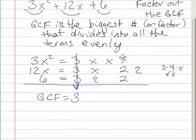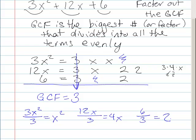That means we can factor 3 out of each of the terms. If we divide 3x squared by 3, we're going to get x squared, which is a nice pretty term. If we pull it out of the 12x, we're going to get 4x. And if we pull it out of the 6, we're going to get 2. So that's how we know for sure it's the GCF.